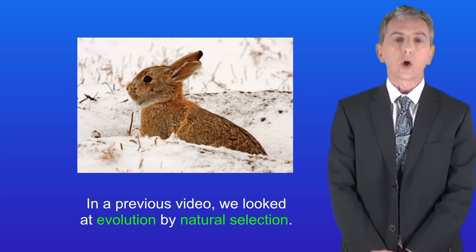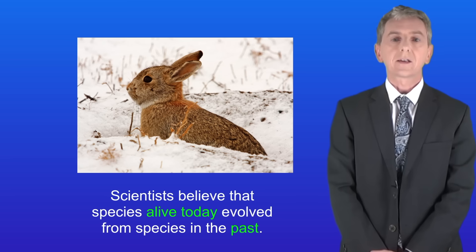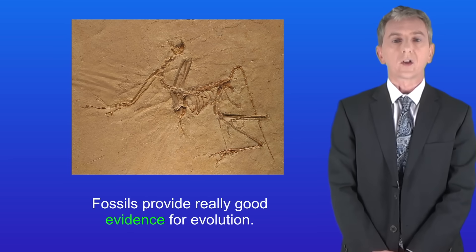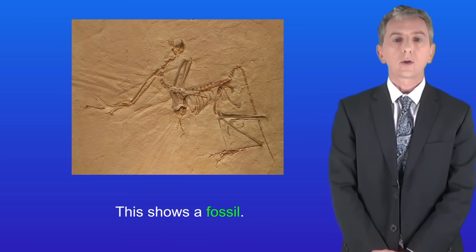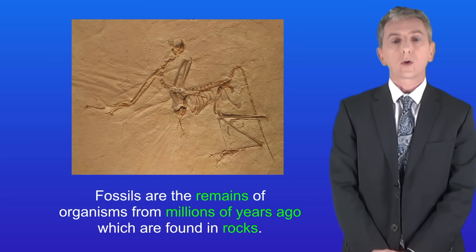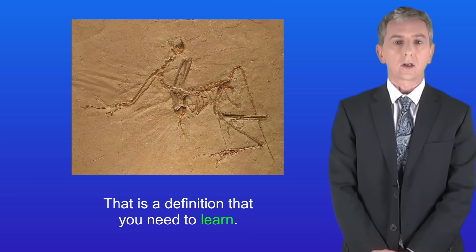In a previous video we looked at evolution by natural selection. Scientists believe that species alive today evolved from species in the past. Now fossils provide really good evidence for evolution, and I'm showing you a fossil here. Fossils are the remains of organisms from millions of years ago which are found in rocks — that's a definition that you need to learn.